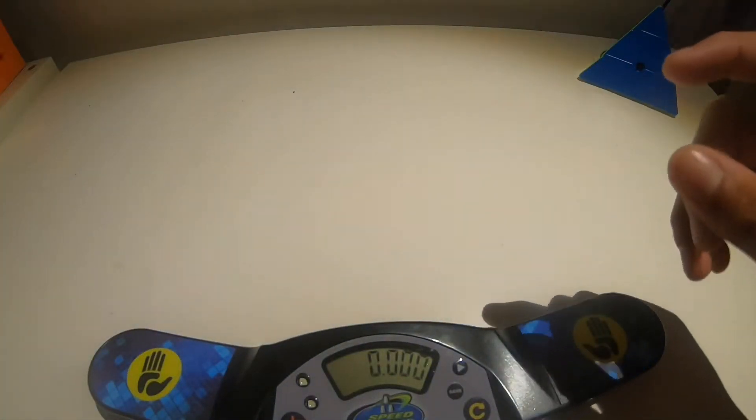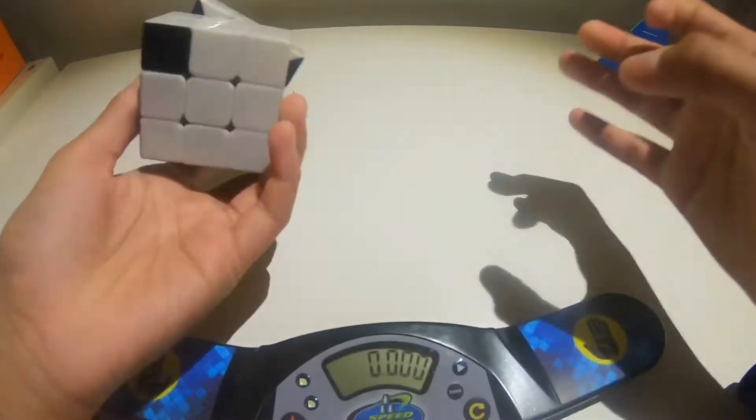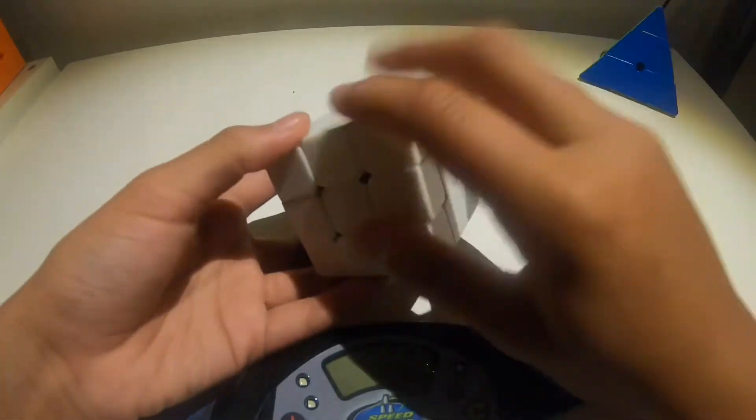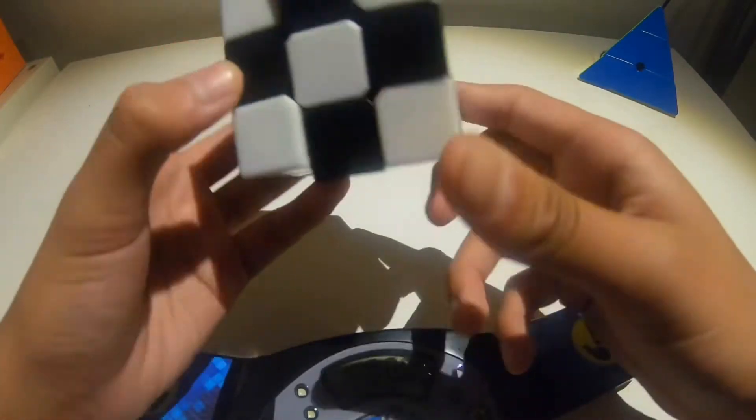And I also got this cube, which is a black and white cube. They're basically two colors. And the solved state is basically when one side is white, the other side is black. And it's actually kind of confusing sometimes. You trip yourself up, but it is a pretty cool puzzle.